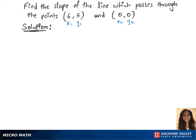Now let's use the slope formula which is m equals y2 minus y1 over x2 minus x1.